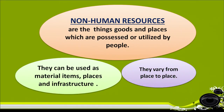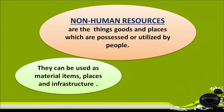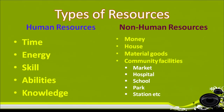They vary from place to place. What are the types of resources? Human resources are time, energy, skill, abilities and knowledge. Non-human resources are money, house, material goods, and community facilities like market, hospital, school, park, station, etc.